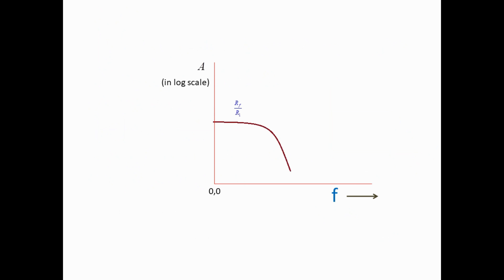In practice, Fc is not a sharp point but has a slight fluctuation, as shown in the figure where there are two Fc values in the curved portion of the graph. Due to this curvature, it is better to use a frequency greater than 10 times the limiting frequency Fc — that is, the operating frequency F should lie between F0 and 10 times Fc.